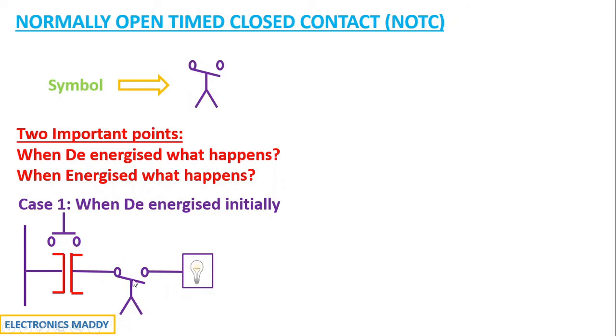Initially, the light actually gets energized only if there is a closed contact over here. Now I am not initially energizing this, as a result it is acting as an open circuit, so no current flows through it and hence NOTC is also de-energized.